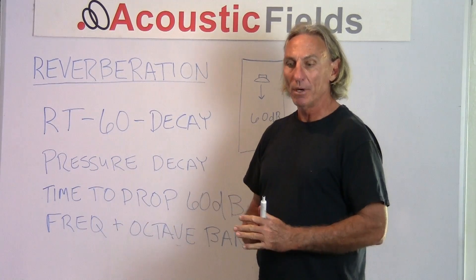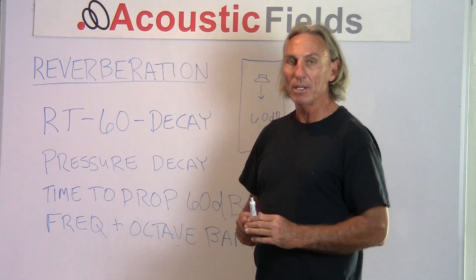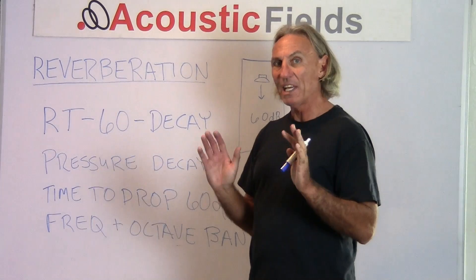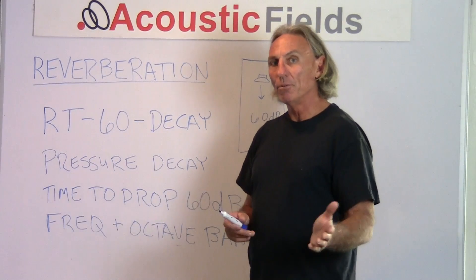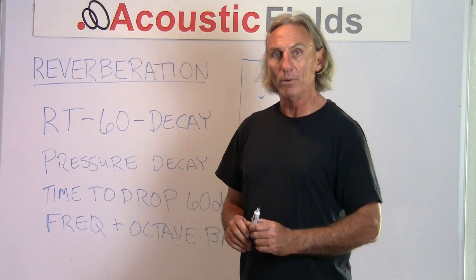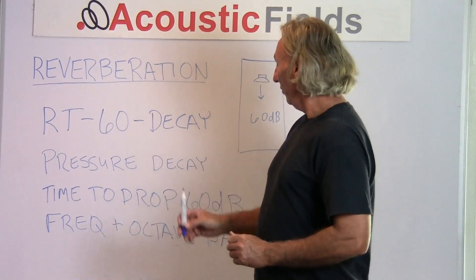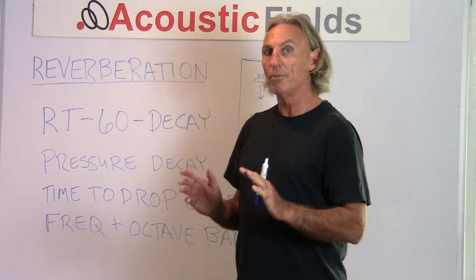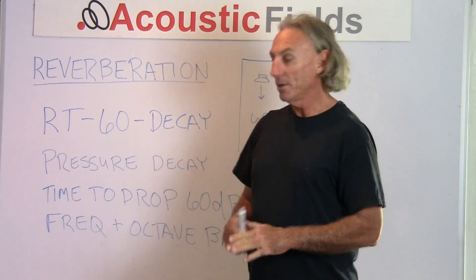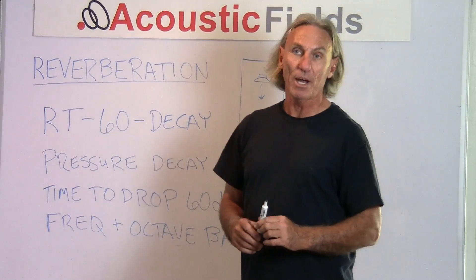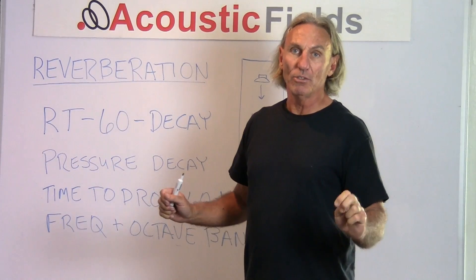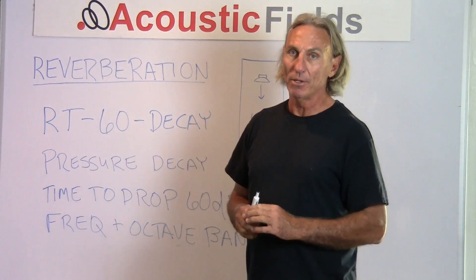It's a way of figuring, once you inject pressure into the room, how long does it take in the time domain for that energy to drop 60 dB. That gives you an RT rate at frequencies and octave bands. It's a decay rate — a measure, in more common language, of how live or how hot the room is. It's a time interval for the pressure to drop at least 60 dB, measured at each frequency and each octave band. We introduce pressure into the room, shut the energy source off, and do our measurements.